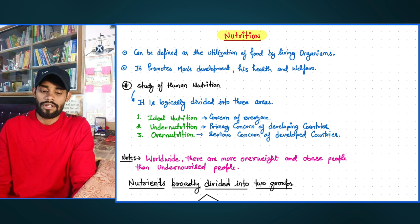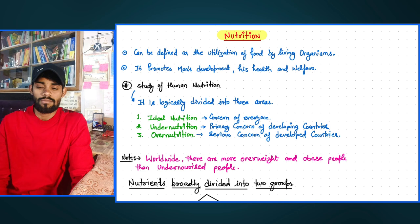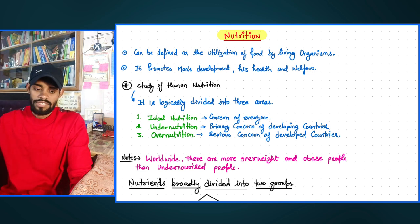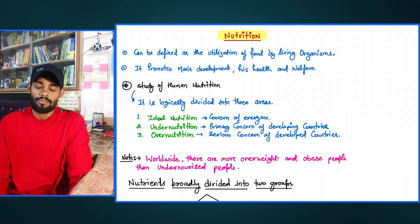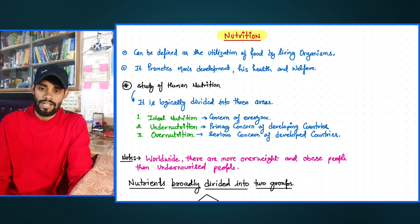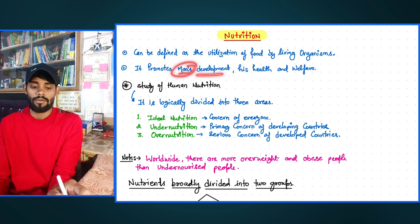Starting with the topic of nutrition: nutrition can basically be defined as the utilization of food for a living organism. We define nutrition by the food we give for a living organism's better growth and development. Body growth and development requires food, and that food provides us nutrition — specific nutrients. Overall, we can say that nutrition promotes human development.